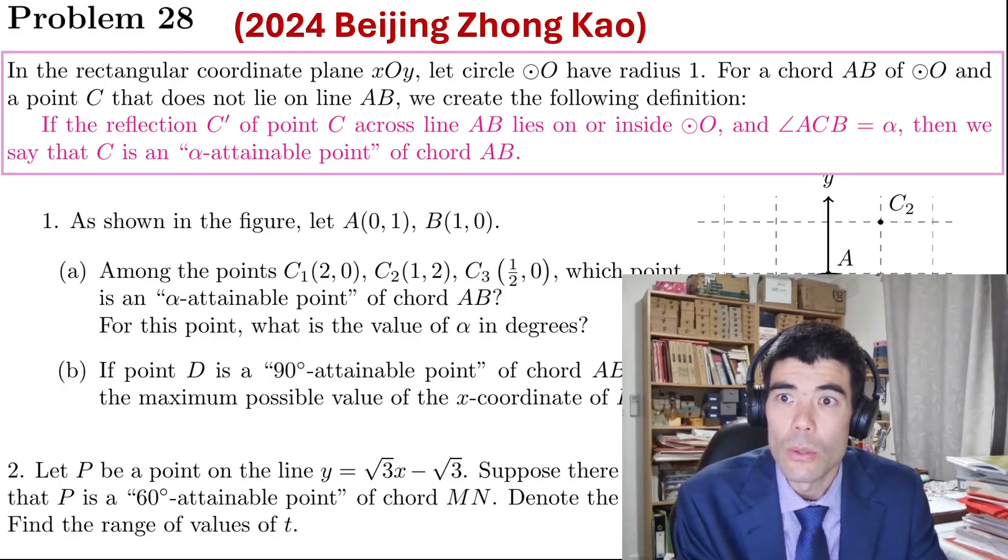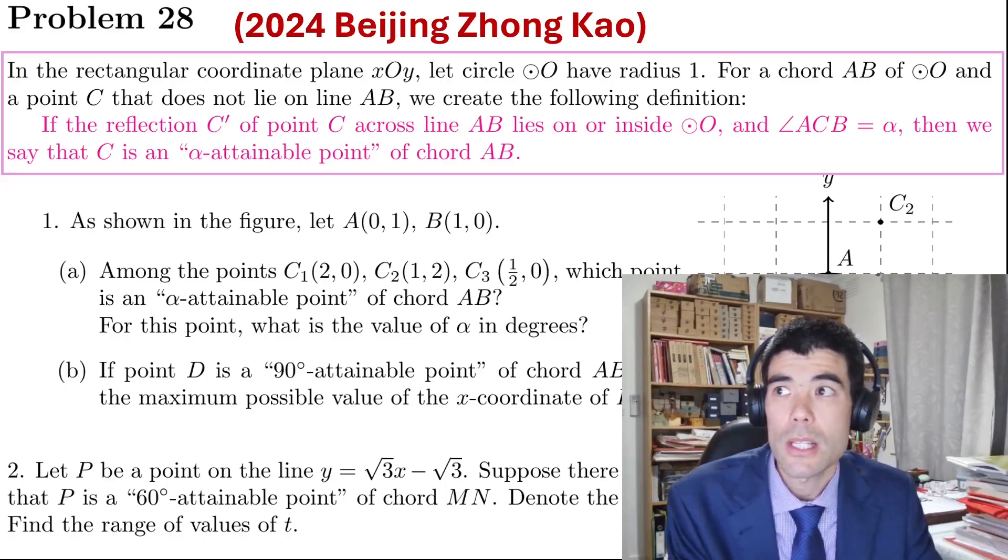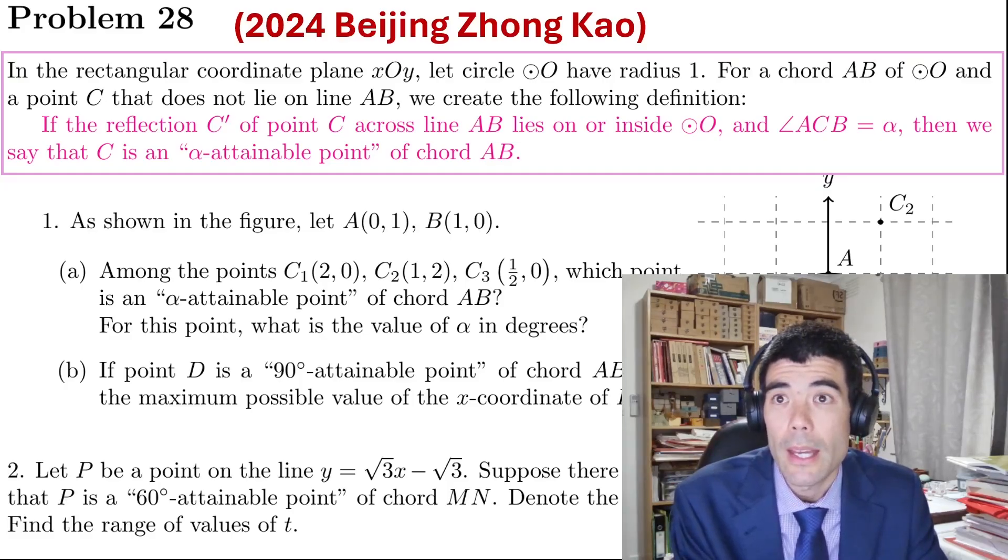So we have a circle radius 1 with chord AB, and if the reflection C' of a point C across line AB lies on or inside the circle, and angle ACB is alpha, we call C an alpha attainable point.